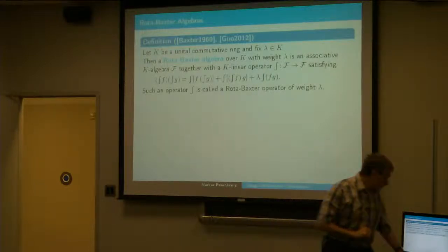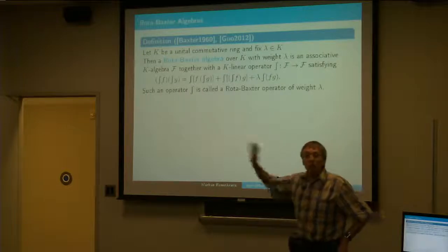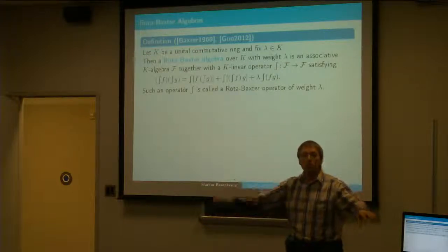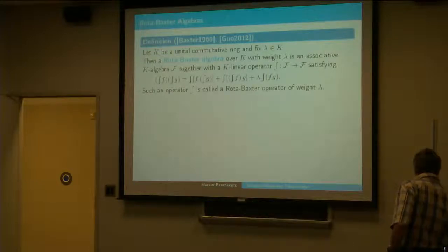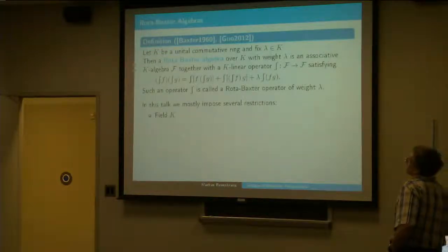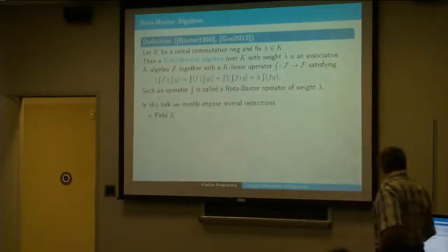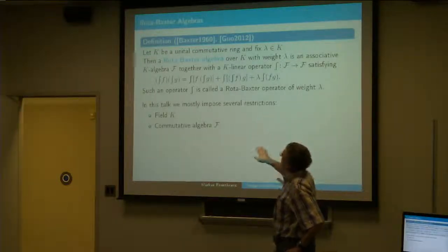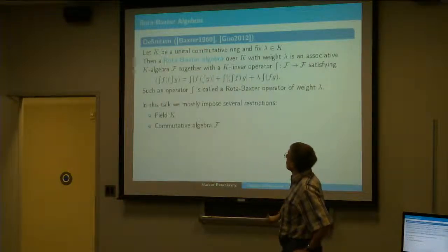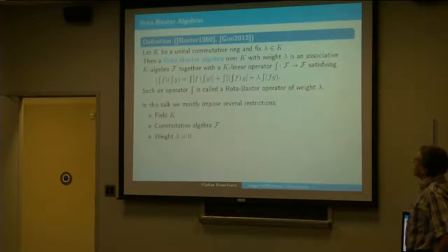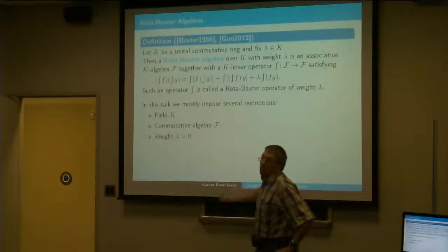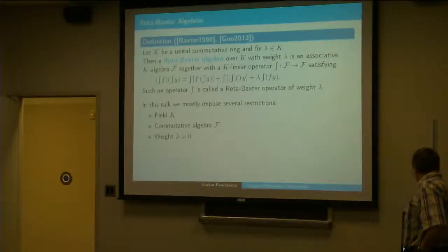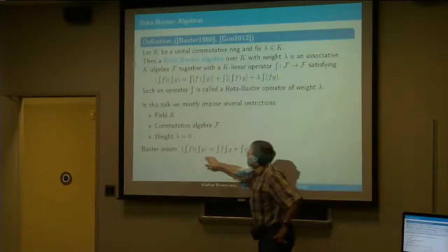So that's the Rota-Baxter algebra. And what I said with the weight essentially being either 0 or 1 means that any Rota-Baxter algebra of arbitrary weight can be brought to one of the two cases by a simple transformation of variables. Here K could be a commutative ring with unit — I will usually use a field. I'm also assuming in 99% of my talks that the algebra is a commutative algebra. And I'm only interested in the continuous case so far — weight is 0 here — and then this axiom really boils down to just that.